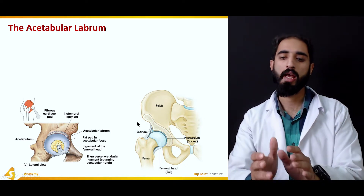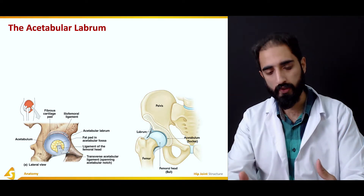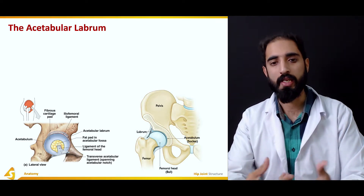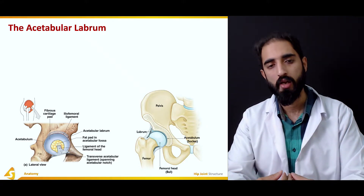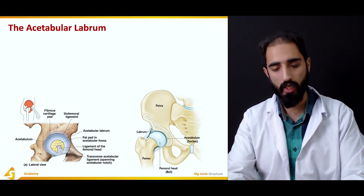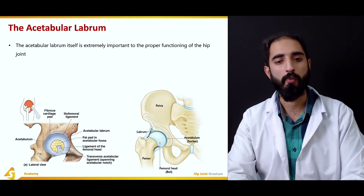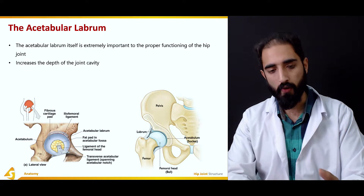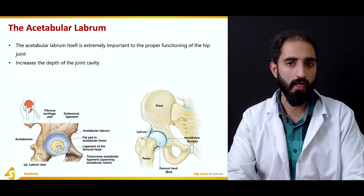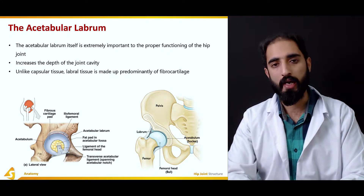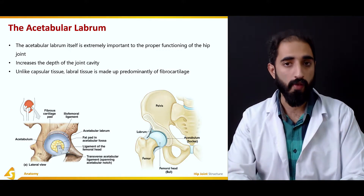Because the acetabulum is not as deep as it needs to be, we need the acetabular labrum to increase the size of the cavity for receiving the femoral head and to increase the stability of the hip joint. The acetabular labrum is extremely important to proper functioning of the hip joint — it increases the depth of the joint cavity, providing stability. Unlike capsular tissue which is made up of collagen, labral tissue is made predominantly of fibrocartilage.